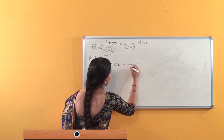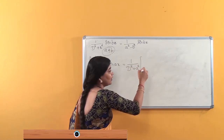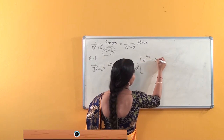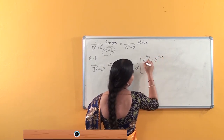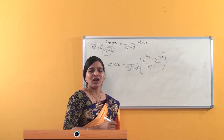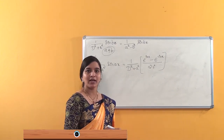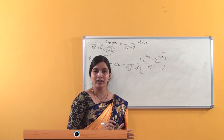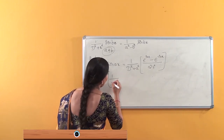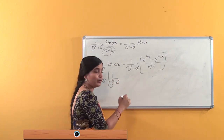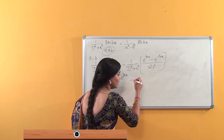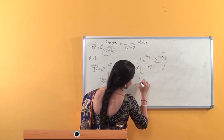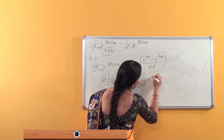This is nothing but 1/(D²+a²) applied to sin(ax). We know that sin(ax) can be written as (e^(iax) − e^(−iax)) / 2i. We keep 1/(2i) outside and take 1/(D²+a²) inside, obtaining 1/(D²+a²)·e^(iax) minus 1/(D²+a²)·e^(−iax).